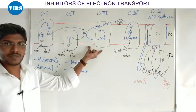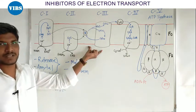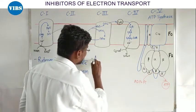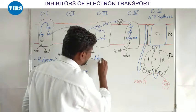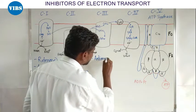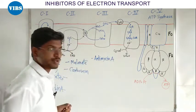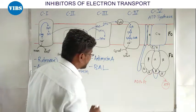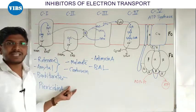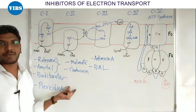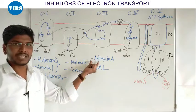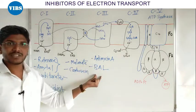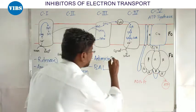Complex III ka naam hai cytochrome bc1 complex. Yaha par jo inhibitors hain woh hain: Antimycin A, and BAL jise hum British Anti-Lewisite ya dimercaprol kehte hain. Antimycin A and BAL — in dono ka mode of action same hai.